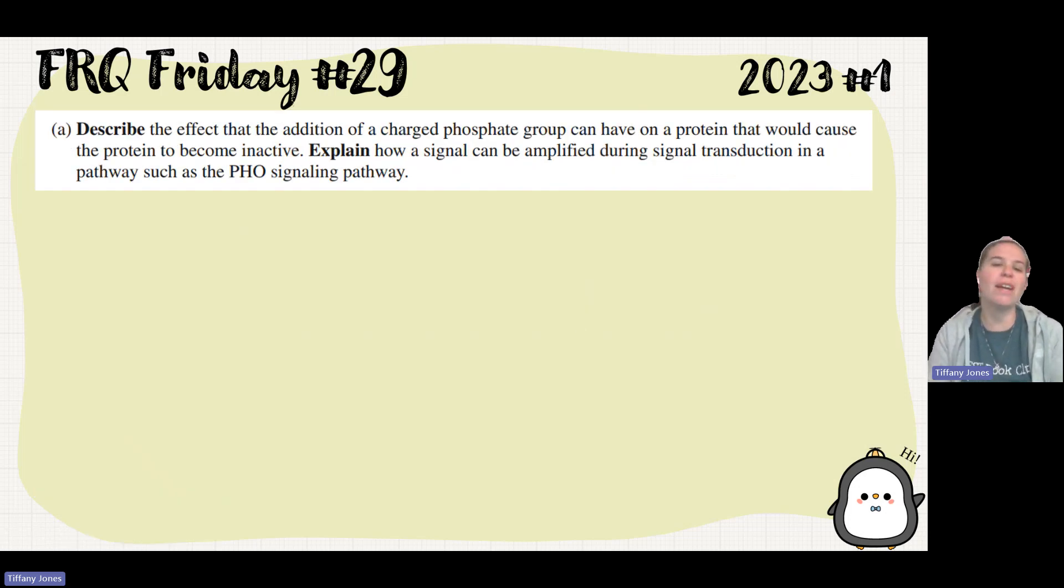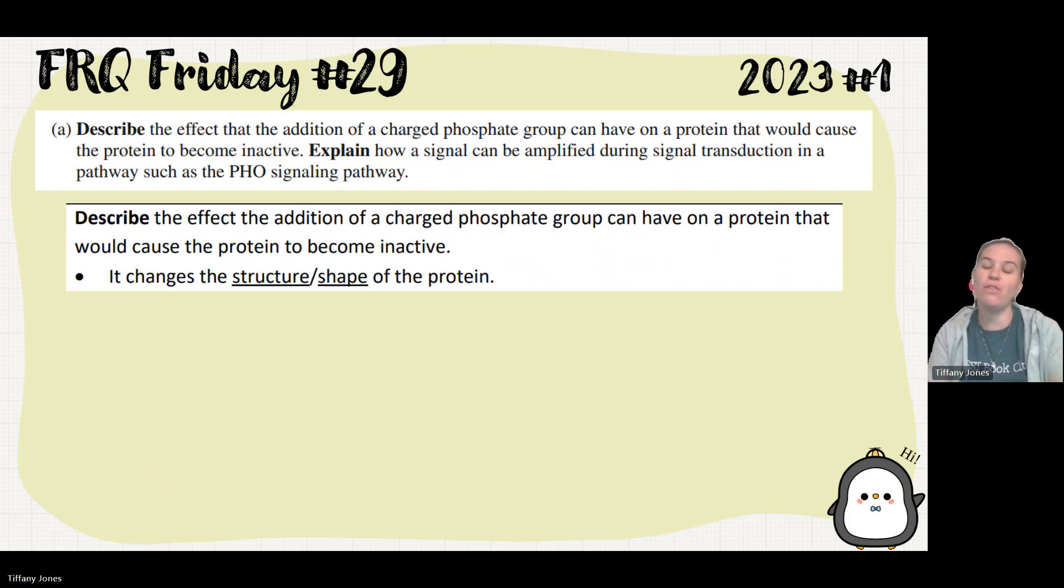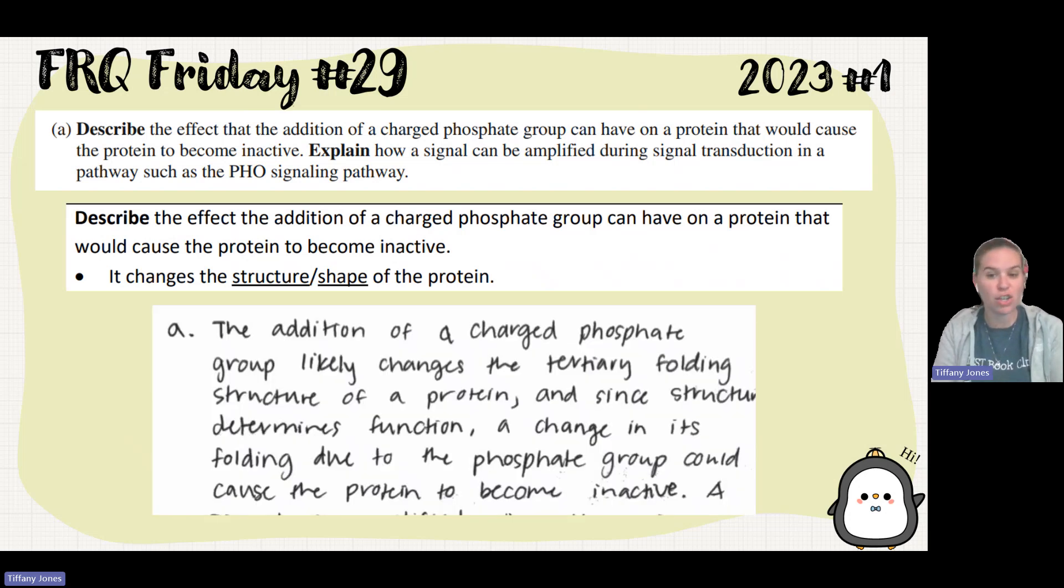Part A says to describe the effect that the addition of a charged phosphate group can have on a protein that could cause the protein to become inactive. So what's happening is we're adding something to a protein. And I always tell my students, if you add something to a protein, you always change the shape. If you change the shape of the protein, you're going to change the function of it. So the student said the addition of a charged phosphate group likely changes the tertiary folding structure of a protein. And since structure determines function, a change in its folding due to the phosphate group could cause the protein to become inactive.